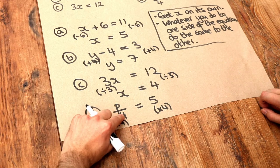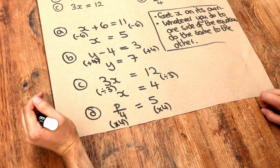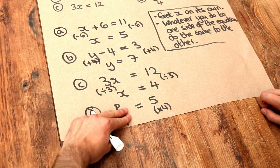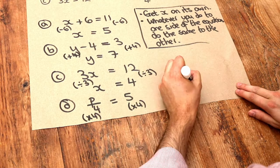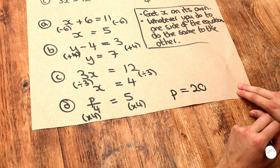Well, 12 divided by 4 times by 4 would just be 12. So we get back to where we started. We're just left with p. So we end up with p is equal to... and 5 times 4 is 20. So that's the final answer.